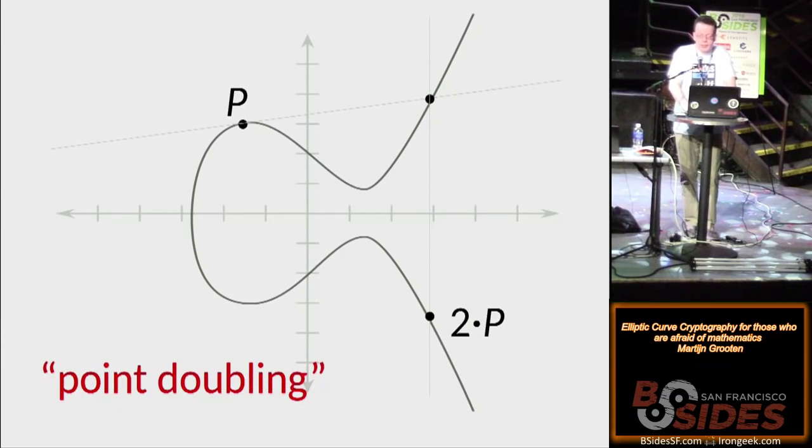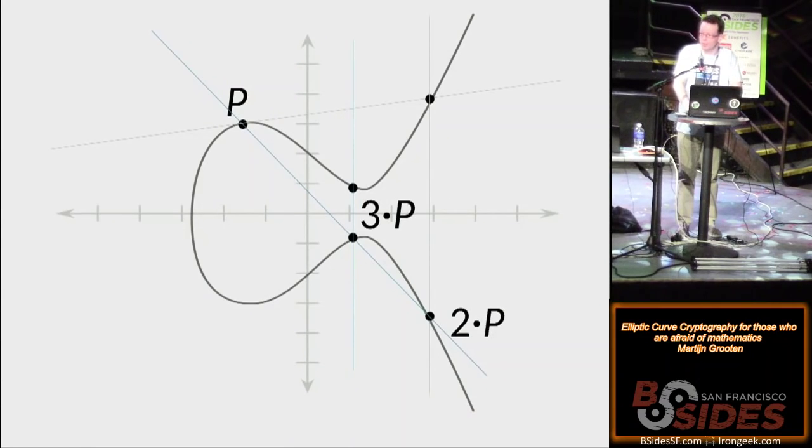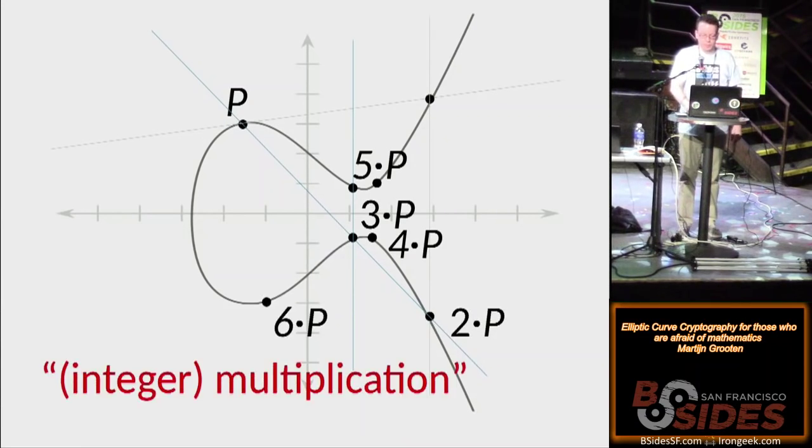And we can combine this. We can combine point addition and point doubling by adding p and two times p. So we take the third point, we take the mirror image, and we get two p plus p, and we call that three times p. And we can continue, we get four times p and five times p, six times p. And this operation is called integer multiplication.